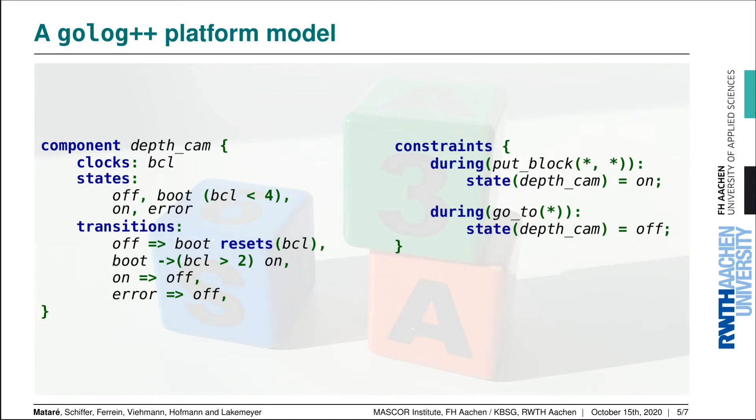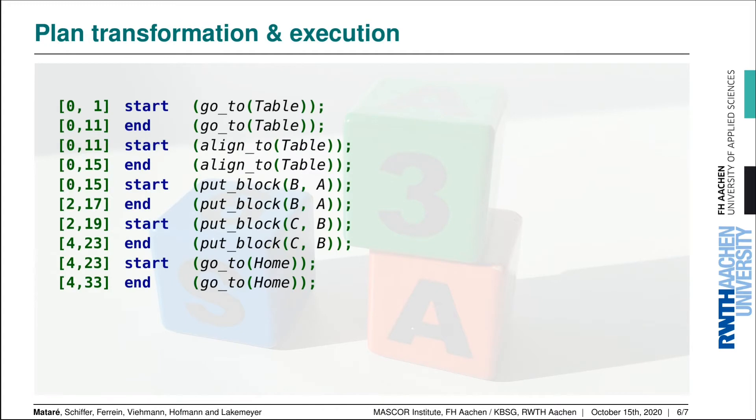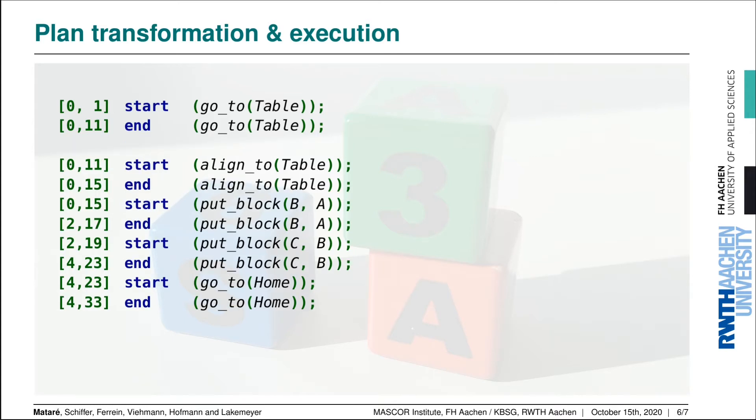Now let's look at how this actually works at runtime. First of all, the depth_cam component will start out in the off state, and that's fine during the go_to action. But once we're done with that, we'll start aligning to the table.